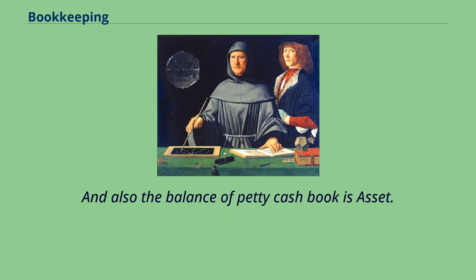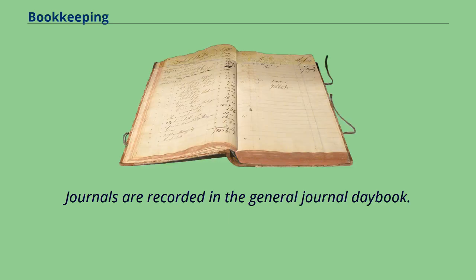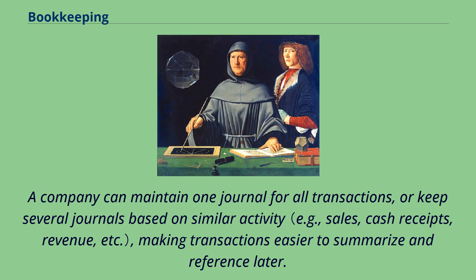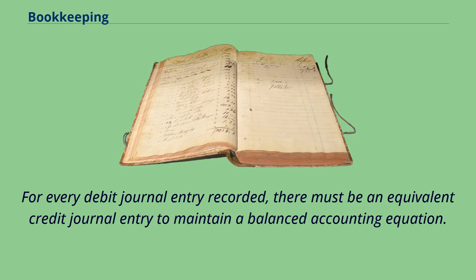The balance of the petty cash book is an asset. Journals are recorded in the general journal day book. A journal is a formal and chronological record of financial transactions before their values are accounted for in the general ledger as debits and credits. A company can maintain one journal for all transactions, or keep several journals based on similar activity, making transactions easier to summarize and reference later. For every debit journal entry recorded, there must be an equivalent credit journal entry to maintain a balanced accounting equation.